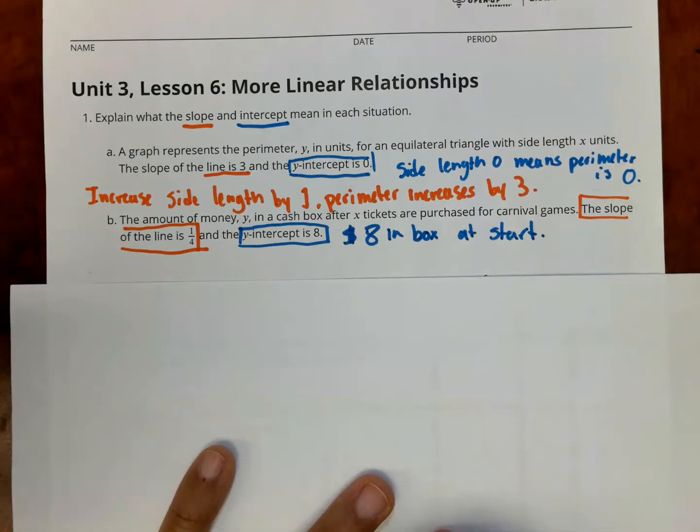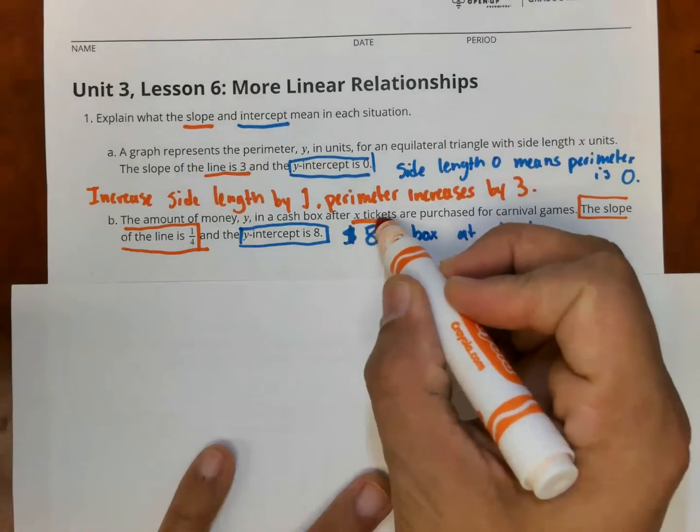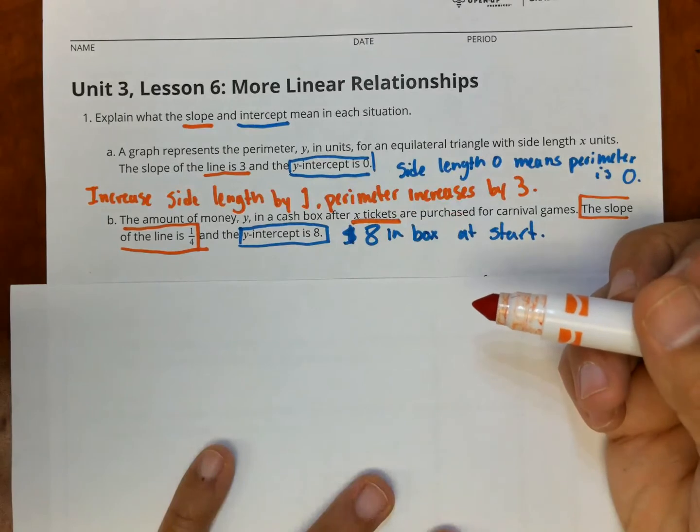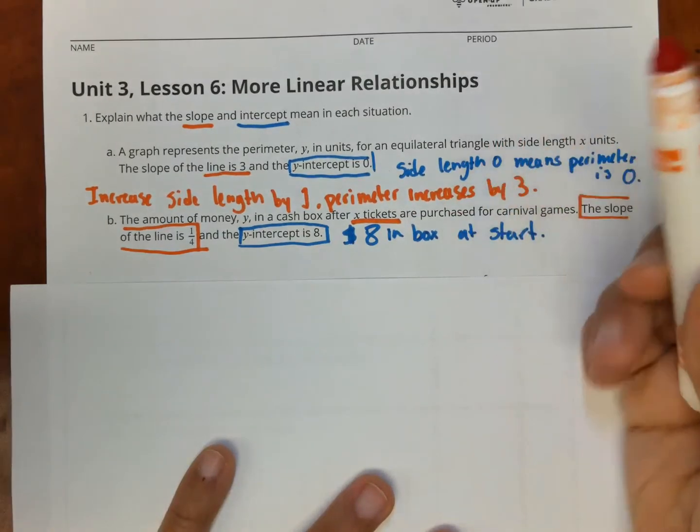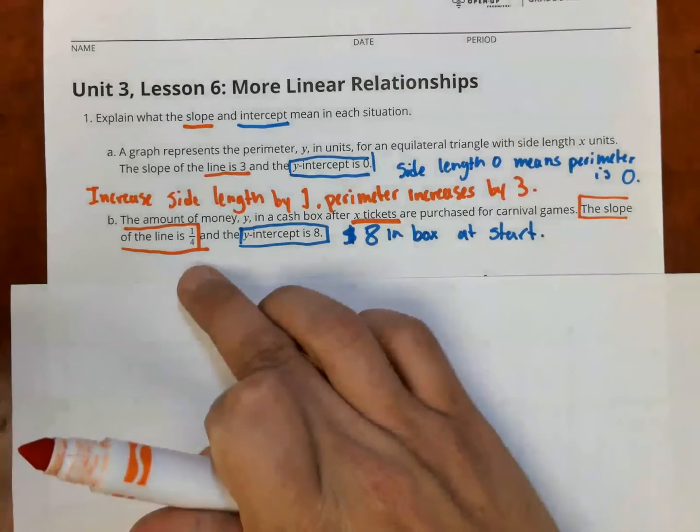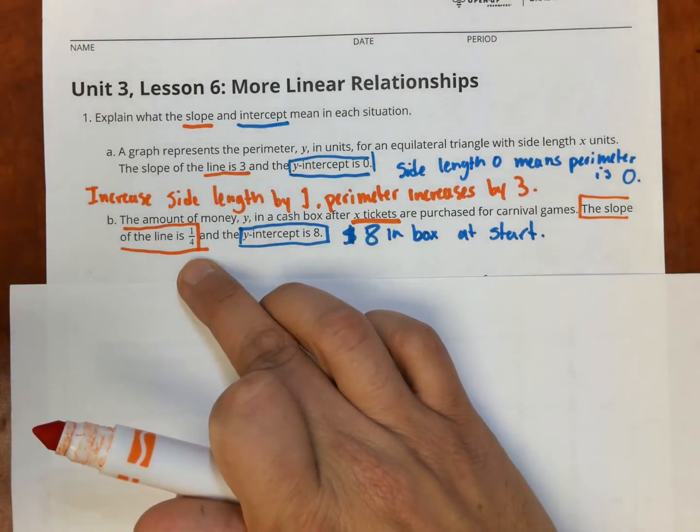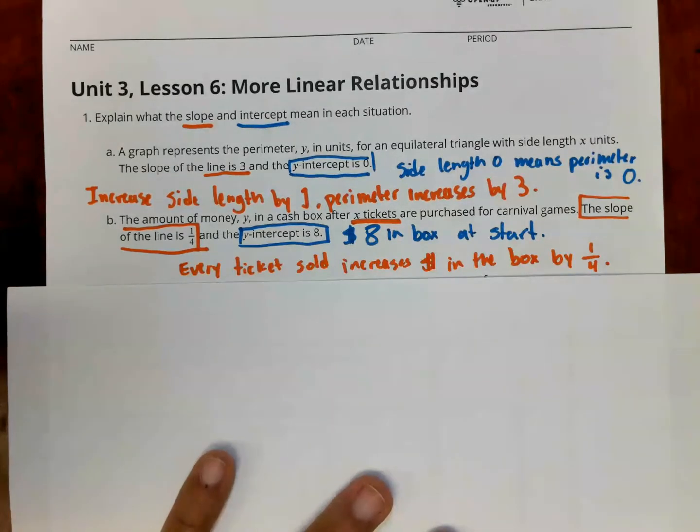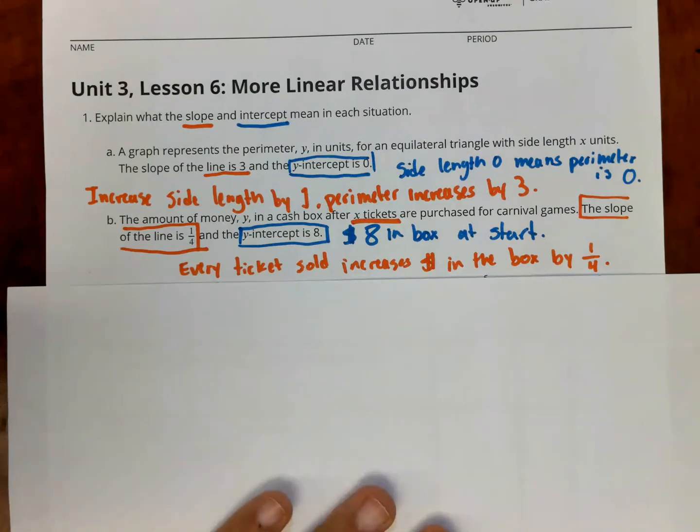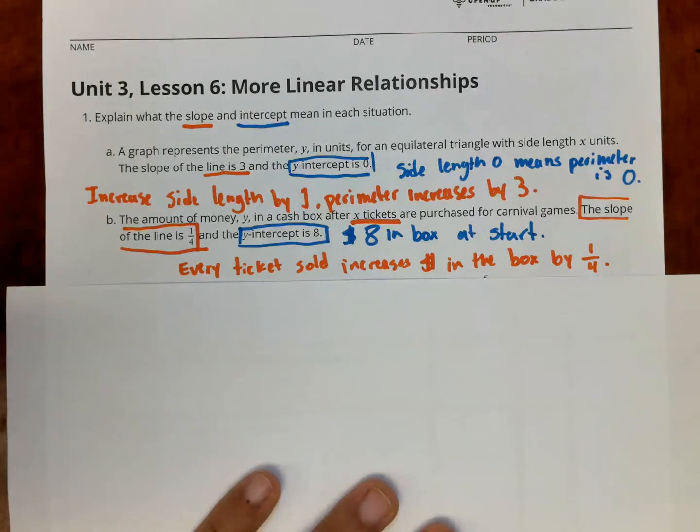Now, when the slope is 1 quarter, in this problem, what are we talking about? We're talking about x tickets. So every time they sell a ticket, the amount of money in the box increases by 1/4 or increases by a quarter. That's the slope. Every 1 of something, it increases. That's what this problem is talking about. So it's also another way to see it is every ticket costs a quarter.